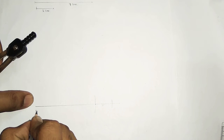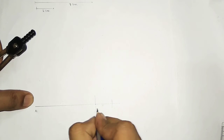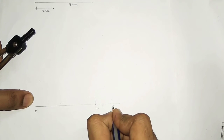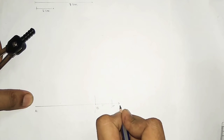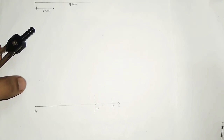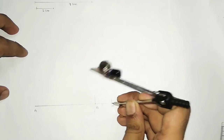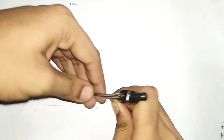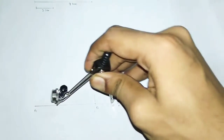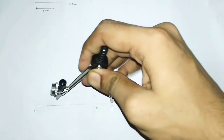Now I am naming the points to clarify: I am naming this as A, this as B, and this as C. Now you have to bisect the line AC. To bisect it, you take a measurement more than half of the line by a rough view.